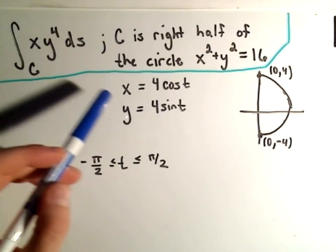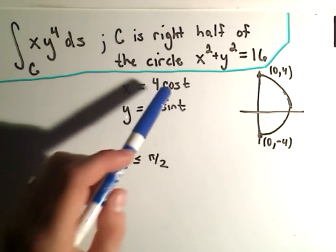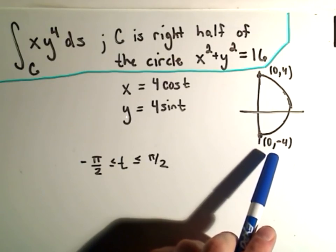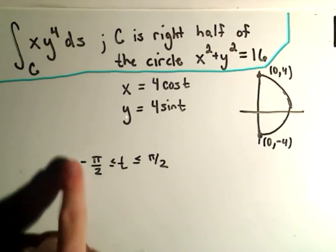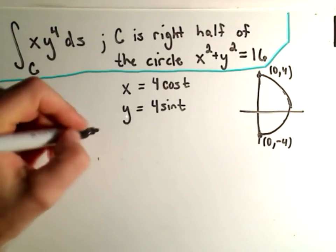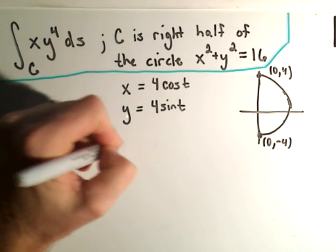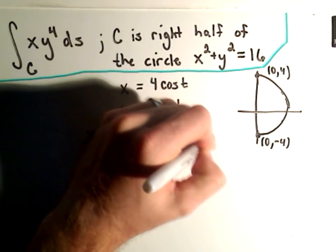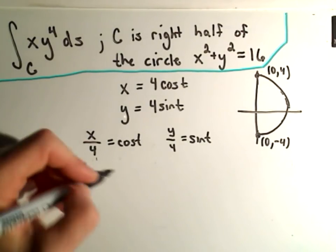Remember to parametrize, basically, to get a circle, you can use x = cos(t), y = sin(t). Here we want the radius of the circle to be 16, so we'll have to use the parameter 4cos(t) and y = 4sin(t). And remember, we could write this as x/4 = cos(t), y/4 = sin(t). Remember the trig identity, sin^2 + cos^2 = 1.